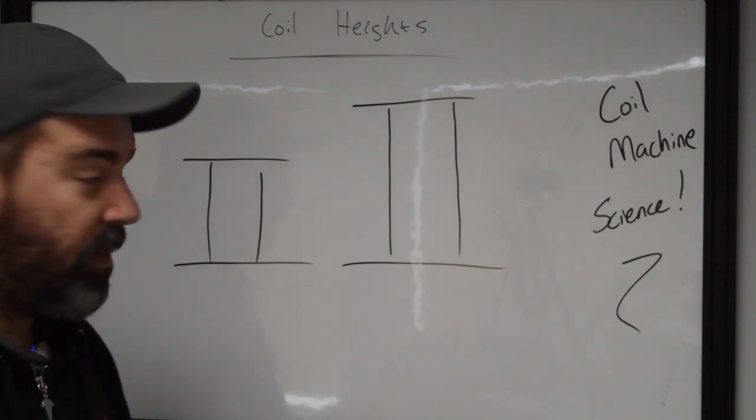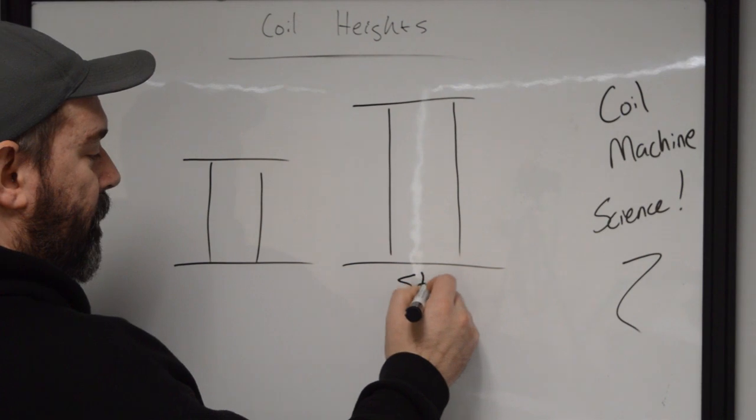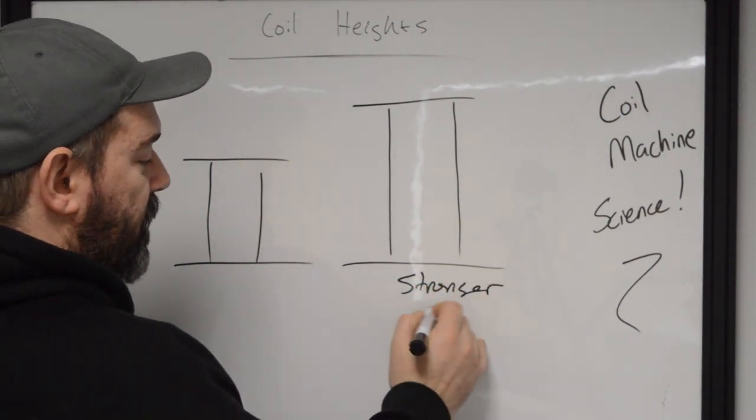which means they're going to need more power, which also means you're going to have a greater amount of magnetic force actually pulling down. So these are stronger, but also slower.